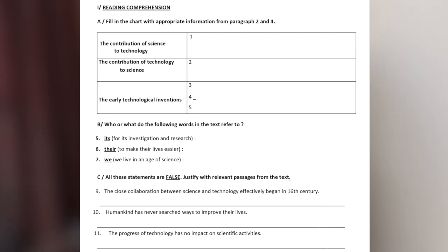Second exercise: who or what do the following words in the text refer to — a reference exercise. The phrases are: 'for its investigation and research,' 'to make their lives easier,' and 'we live in an age of science.' Do both exercises in pairs and check your answers together.